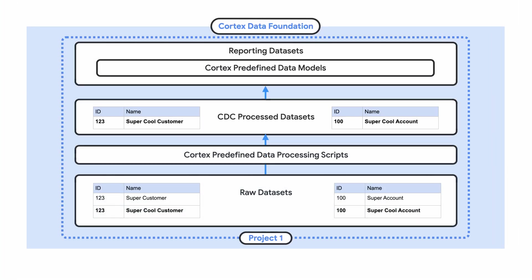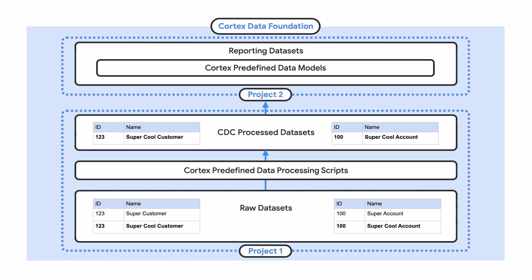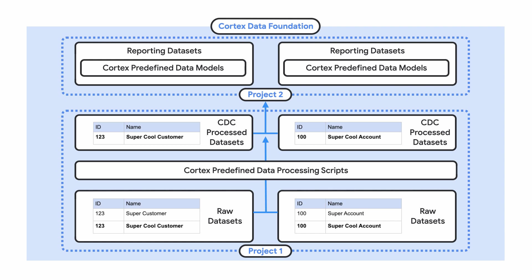Now that we have reporting-ready processed data in our CDC dataset, it's time to configure the reporting layer. Business users will access reporting models from the reporting dataset. Because the access controls for reporting datasets are often different from those where more technical practitioners work — like CDC and raw datasets — you may choose to deploy Cortex predefined data models into reporting datasets in different projects to manage access and permissions differently. You can also deploy each workload, like SAP or Salesforce, into separate datasets and projects depending on your needs. Within the reporting datasets, you have the opportunity to optimize reporting models based on your unique data volume, performance, and cost requirements. You can choose to have a BigQuery view computing results every time it is executed for more lightweight models, or a DAG frequently materializing query results into a table.